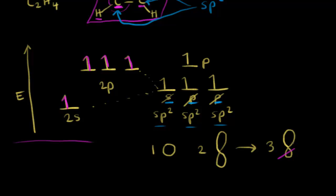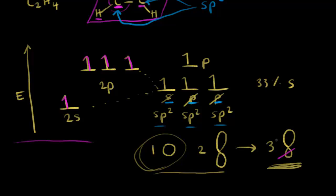In terms of percentage character, we have three orbitals total. One of them is an s orbital, so one out of three gives us 33% s character in our new sp2 hybrid orbital. Then we have two p orbitals, so two out of three gives us 67% p character. There's more s character in an sp2 hybrid orbital than in an sp3 hybrid orbital. Since electron density in an s orbital is closer to the nucleus, that means this lobe is a little bit shorter, and that's going to have an effect on the length of the bonds we'll be forming.